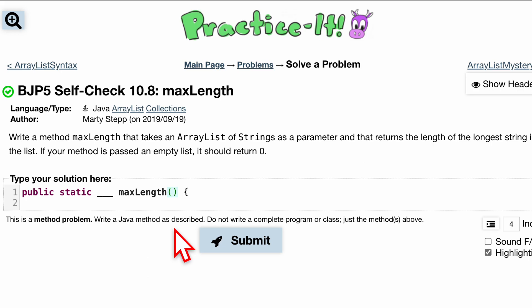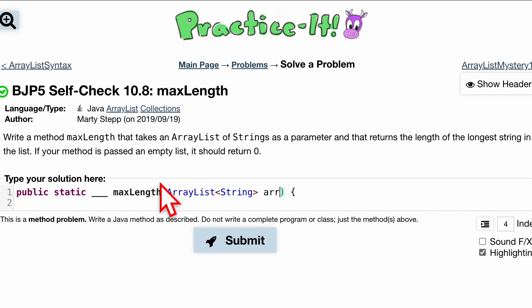If we pass in a parameter of ArrayList, it's going to look like ArrayList, type inside of these little carrots. We'll have a name for it, we'll just do arr. That's this parameter, and it returns the length of the longest string in the list. If our method is passed an empty list, it should return zero.